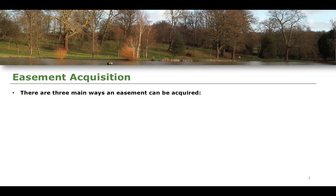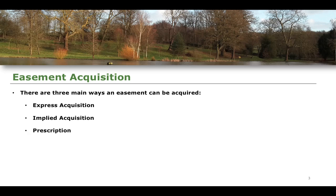Easement acquisition can be achieved through one of three main methods. The first, which we'll focus on in this lesson, is express acquisition of an easement. The second is known as implied acquisition, which we'll cover in future lessons. Finally, we'll spend a couple of lessons talking about prescription of an easement, which has some complex elements that might be a little tricky to get your head around.